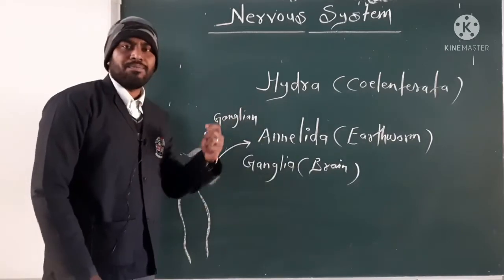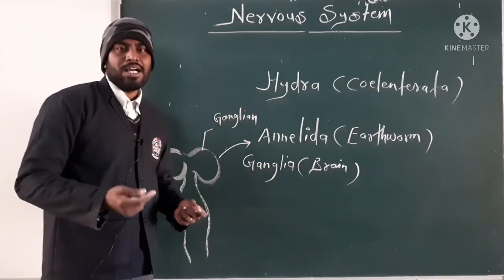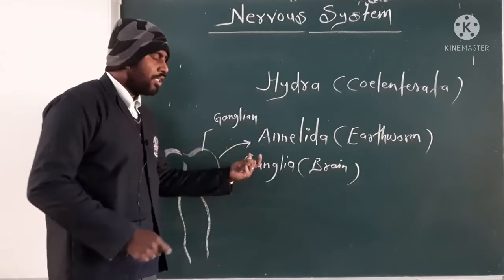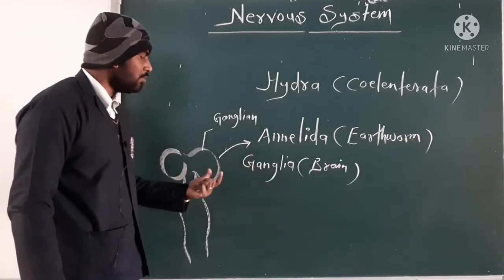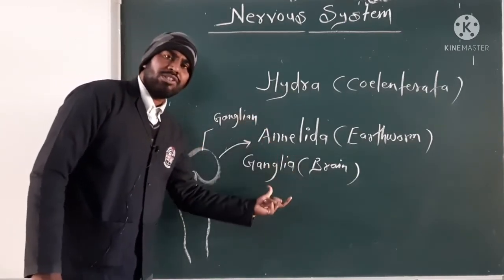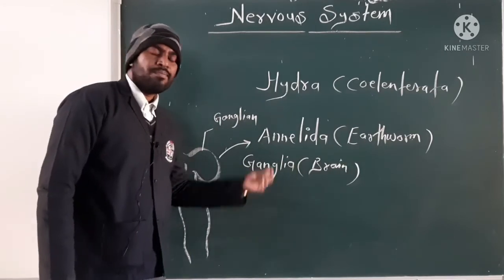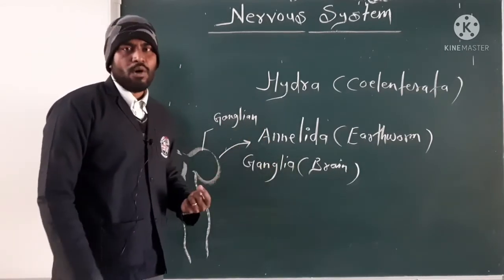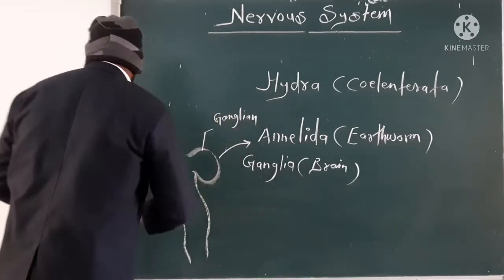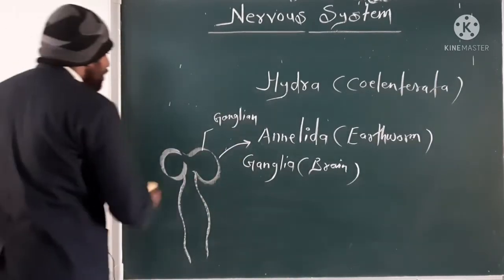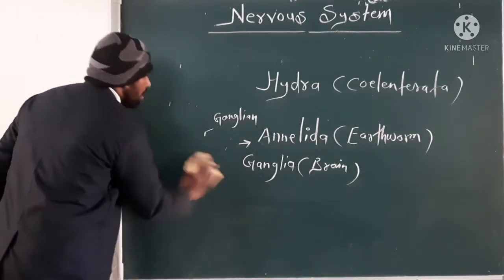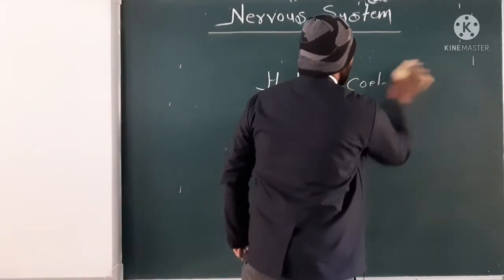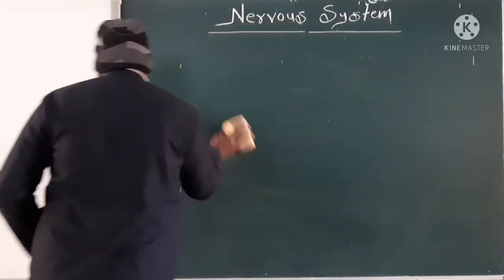As we go further, through arthropoda and mollusca, we come to vertebrates. When we talk about the chordata group of vertebrates, a more complex structure is seen. In fishes, the brain begins to form. In higher mammals — the more complex vertebrates — an even more complex neural system is present.